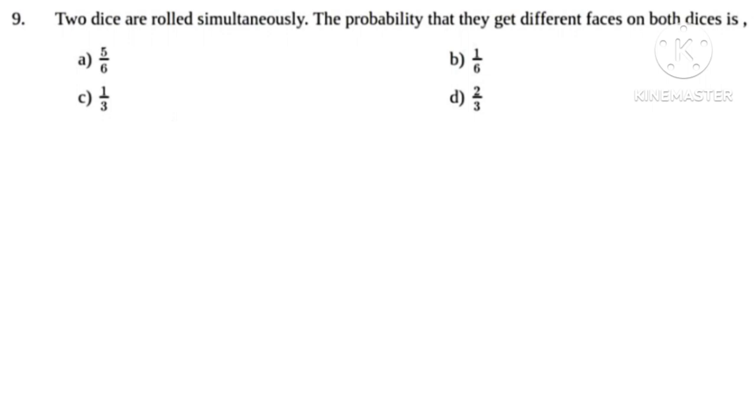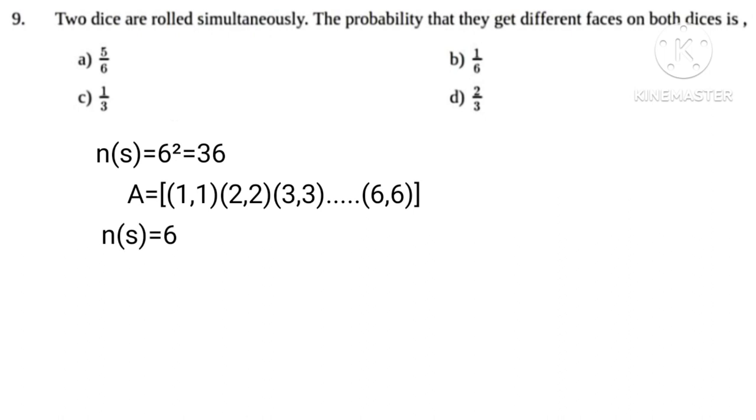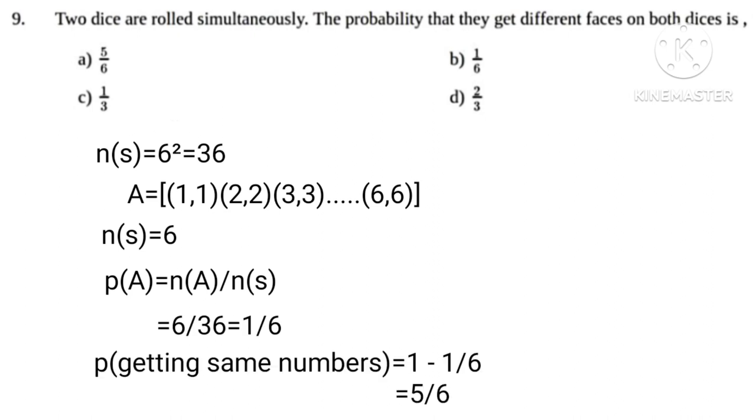Two dices are tossed up simultaneously, therefore n(S) equals 6 squared equals 36. Let A equals all possible sets having same numbers: (1,1), (2,2), (3,3)... (6,6). n(A) equals 6, therefore P(A) equals 6 upon 36 equals 1 upon 6. P not getting same numbers equals 1 minus 1 upon 6 equals 5 upon 6.